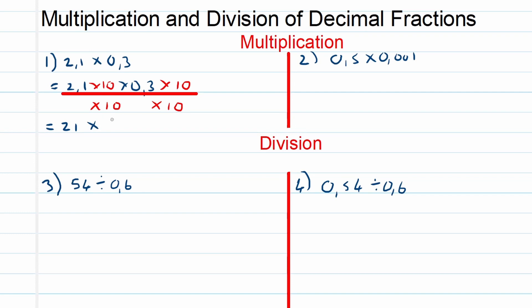So 2.1 times 10 is 21, 0.3 times 10 is 3, and remember we are still dividing by 10 times 10, which is 100. Then 21 times 3 is equal to 63 over 100, and we know that is equal to 0.63.